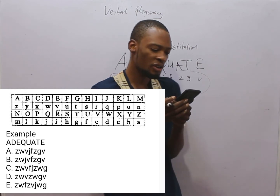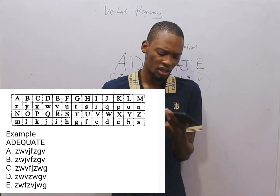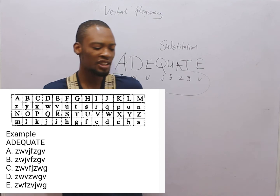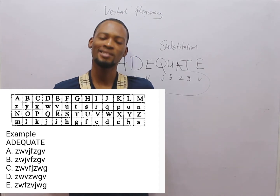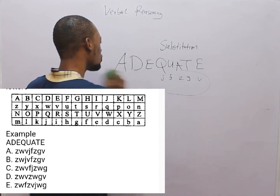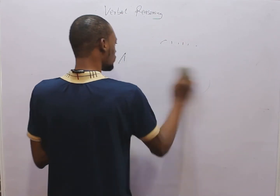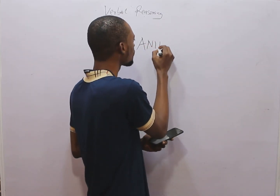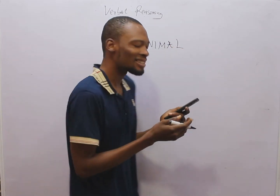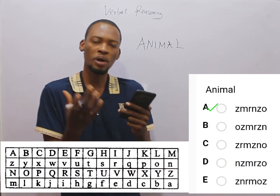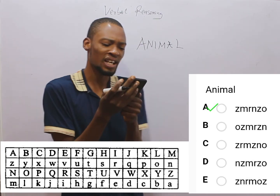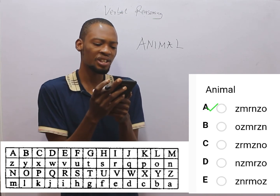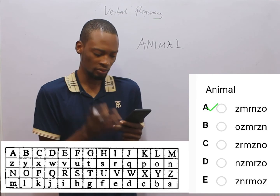In this one they gave you the example, and I've analyzed how they arrive at option A being the correct option. Now let's solve the main question. In the main question we are given the capital letter word 'ANIMAL' and we are asked to represent it using the code in the box. Each small letter represents the capital letter above it. Choose the correct code for the word given using the small letters.